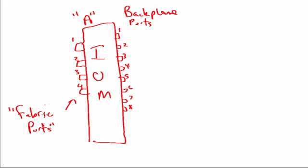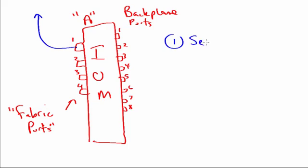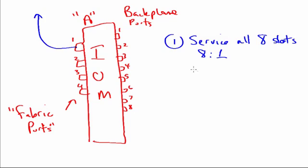Our first connectivity option is to have one IOM port connected. If we have one fabric port connected, it will service all eight slots. That is what's called an eight-to-one oversubscription — all eight blades make use of the single 10-gig fabric port.